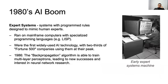In the 1980s, we had the second Artificial Intelligence boom. Expert systems with programmed rules, designed to mimic human experts, ran on mainframe computers with specialized programming languages such as LISP — the first widely used AI technology, with two-thirds of Fortune 500 companies using it at their peak.